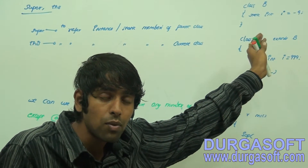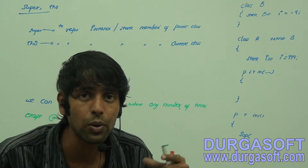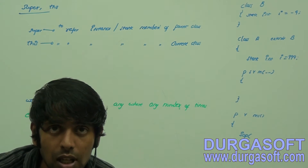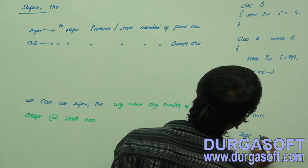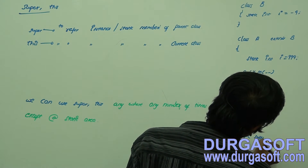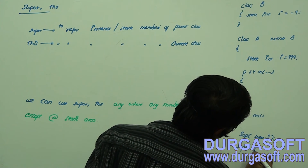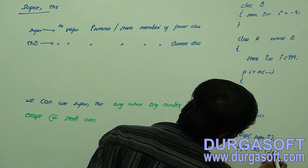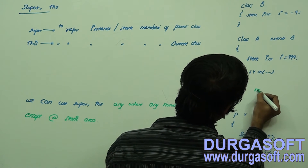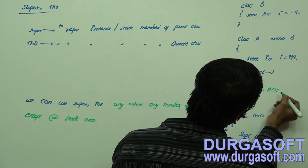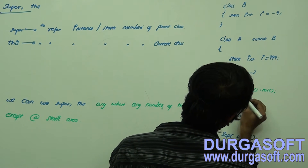By default, the static from the parent will be available to us. But I want to make it clear that by using super and this you can refer to both static and instance members. Inside m1, I print super.i and also this.i. Now I create an instance with new A, and on that reference call m1.